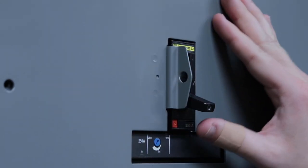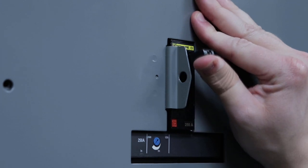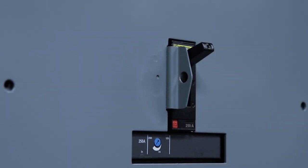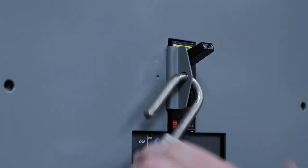In the same way, to padlock in the on position, you'll simply have the breaker in the on position and again just slide the padlock through that hole.